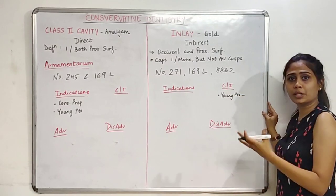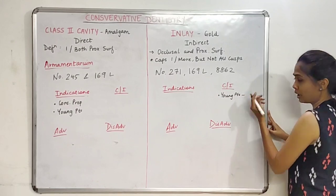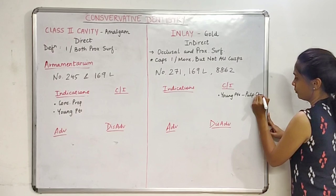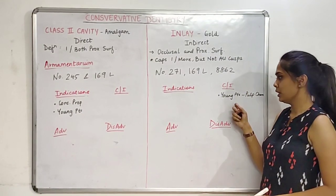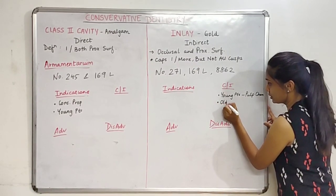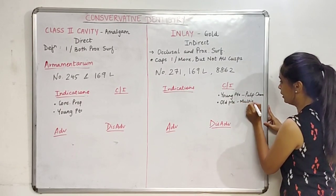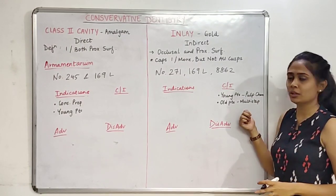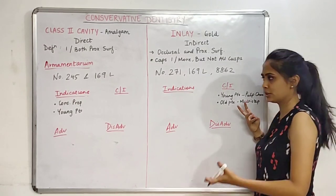The inlay is contraindicated in young patients because their pulp chambers are very large — the pulp is very near the surface — so we don't want to hurt the pulp with this deep cavity. It is also contraindicated in elderly patients because it is a multi-step procedure, though this is not an absolute contraindication.